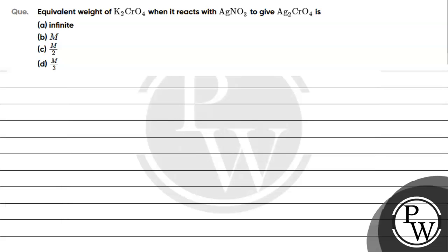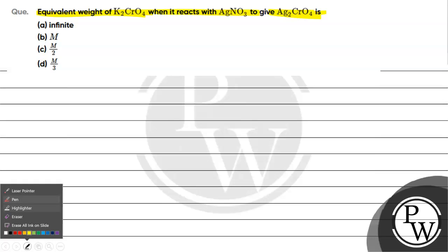Hello Bacho, let's read this question. Question says equivalent weight of K2CrO4 when it reacts with AgNO3 to give Ag2CrO4 is: option A infinite, option B M, option C M by 2, option D M by 3.